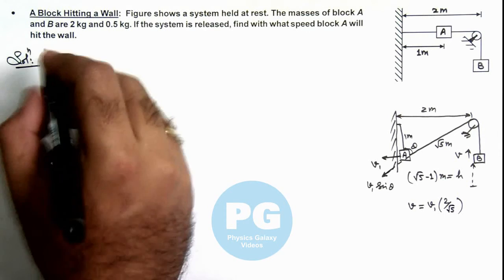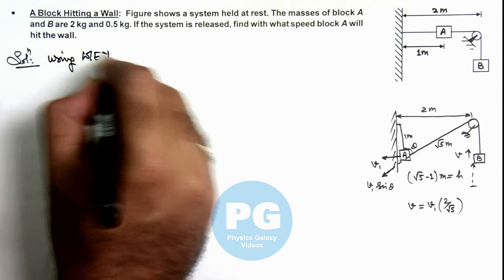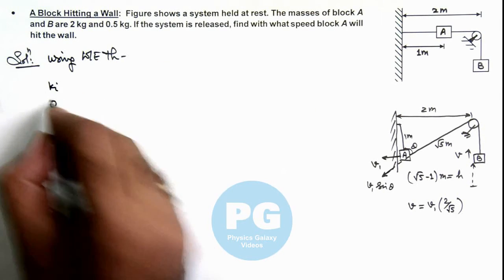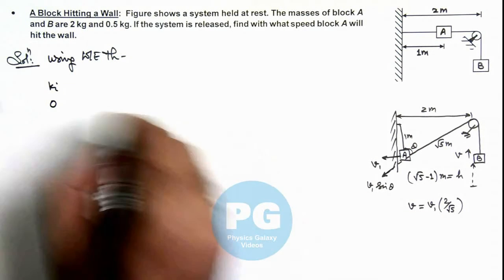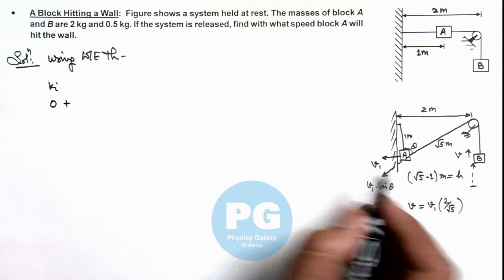Now in this situation, we can write using work energy theorem. We can write initial kinetic energy of the blocks was zero as these were released from rest, and when these are falling block A is displaced down by 1 meter.